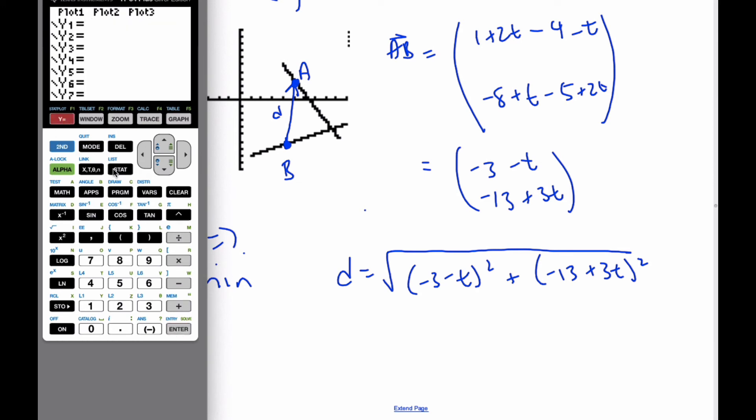And now I'm going to go to Y equals, and I'm going to put this in: the square root of (-3 - X)^2, and then (-13 + 3X)^2. And I'm going to use my default window, and I'm looking for the minimum value.